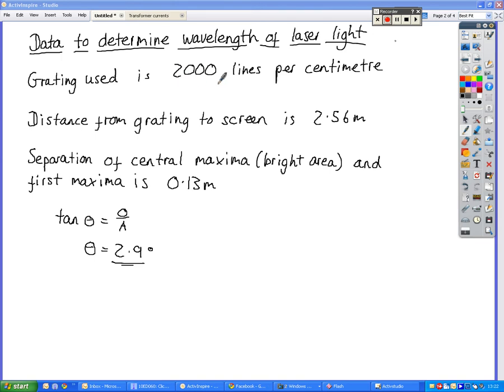So the grating had 2,000 lines per centimeter, so that's 2,000 little gaps every centimeter. We measured the distance to the screen and the distance between the central maxima, the first area of constructive interference, and the one next to it, and we found that that was 0.13 meters.